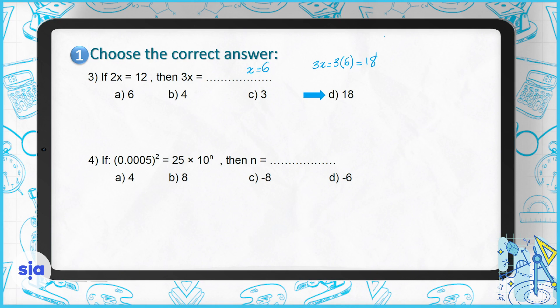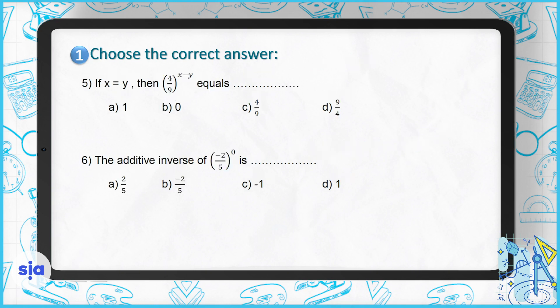Question 4: if (0.0005) to the power of 2 equals 25 times 10 to the power of n, what is the value of n? The square of 0.0005 is 0.00000025. Writing this in scientific notation: 25 times 10 to the power of negative 8, moving the decimal 8 places to the left. The right answer is choice C.